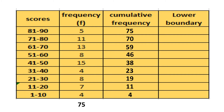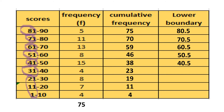Now let's go to the lower boundary column. For each lower boundary, you subtract 0.5 from the lower class limit. So 81 minus 0.5 is 80.5, 71 minus 0.5 is 70.5, 61 minus 0.5 is 60.5, followed by 50.5, 40.5, 30.5, 20.5, 10.5, and 1 minus 0.5 is 0.5.